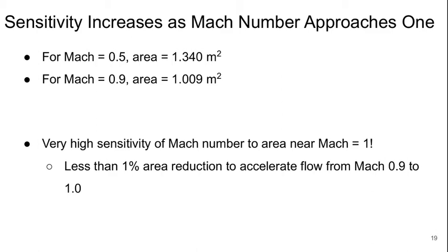So what we see is that there's a very high sensitivity of the Mach number to the area in the vicinity of Mach 1. Less than a 1% area reduction is needed to accelerate a flow from Mach 0.9 to Mach 1.